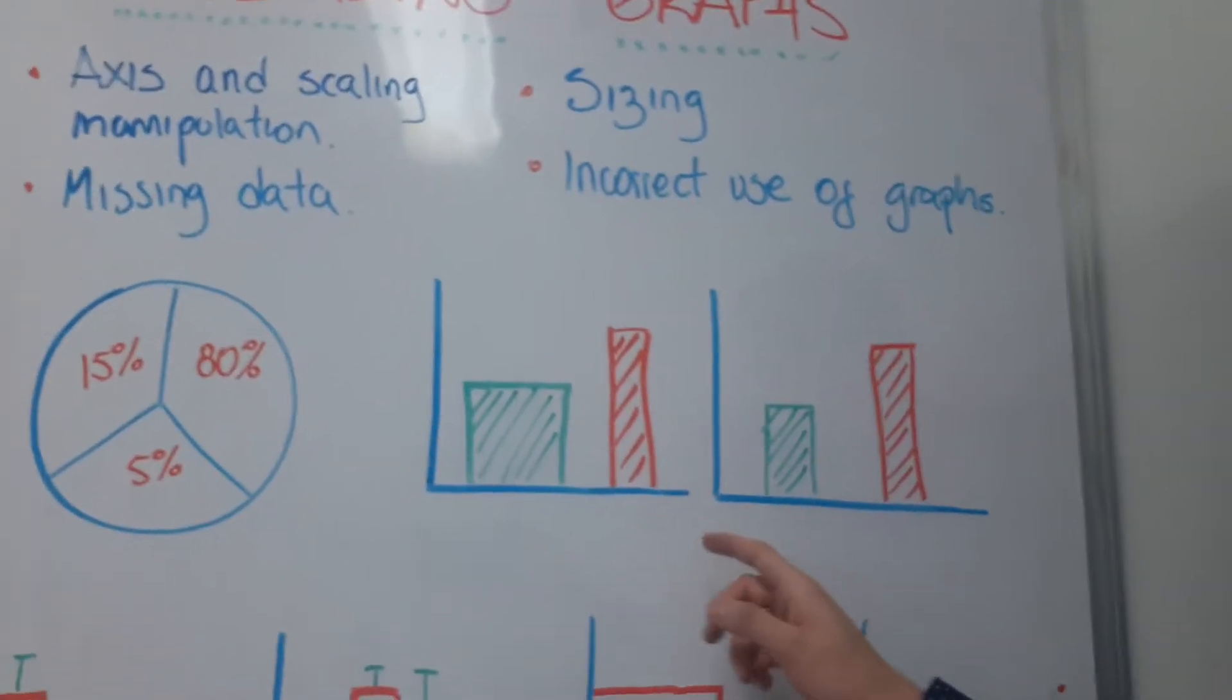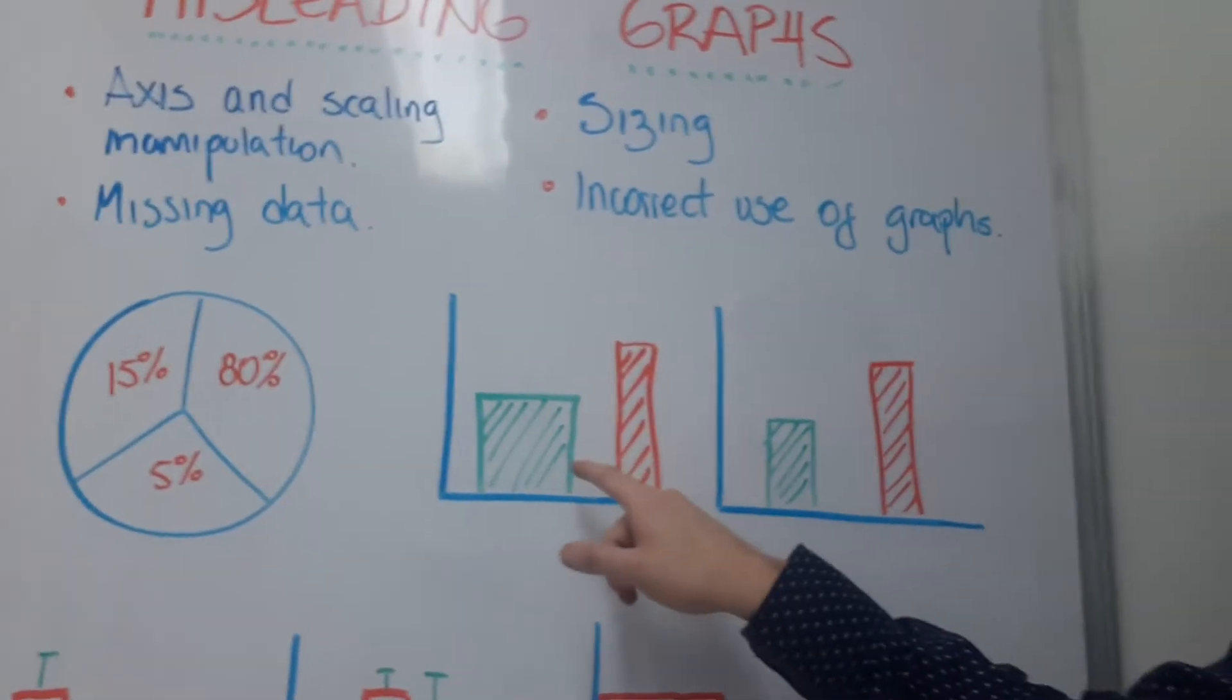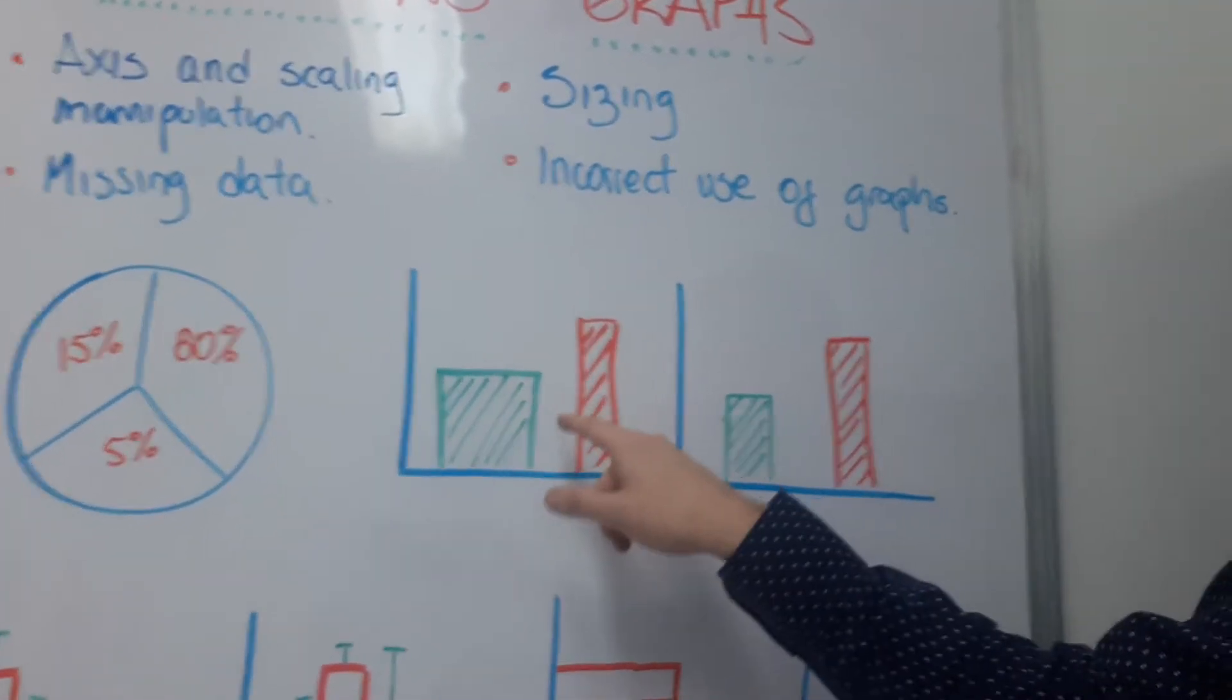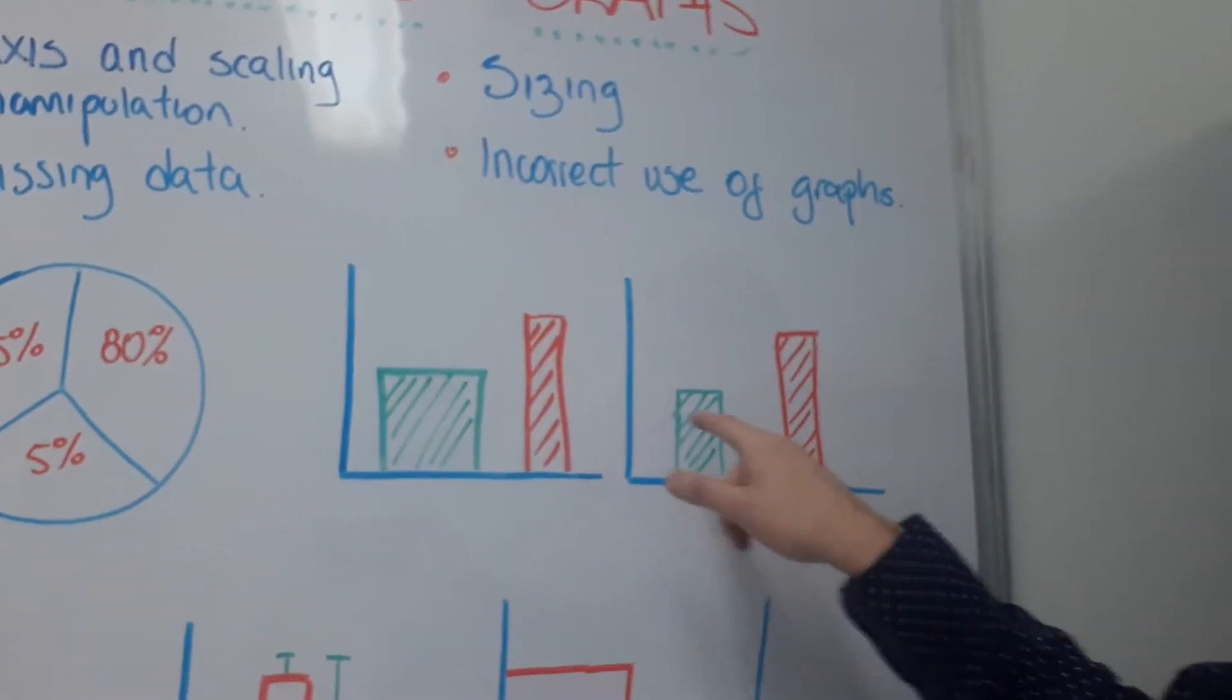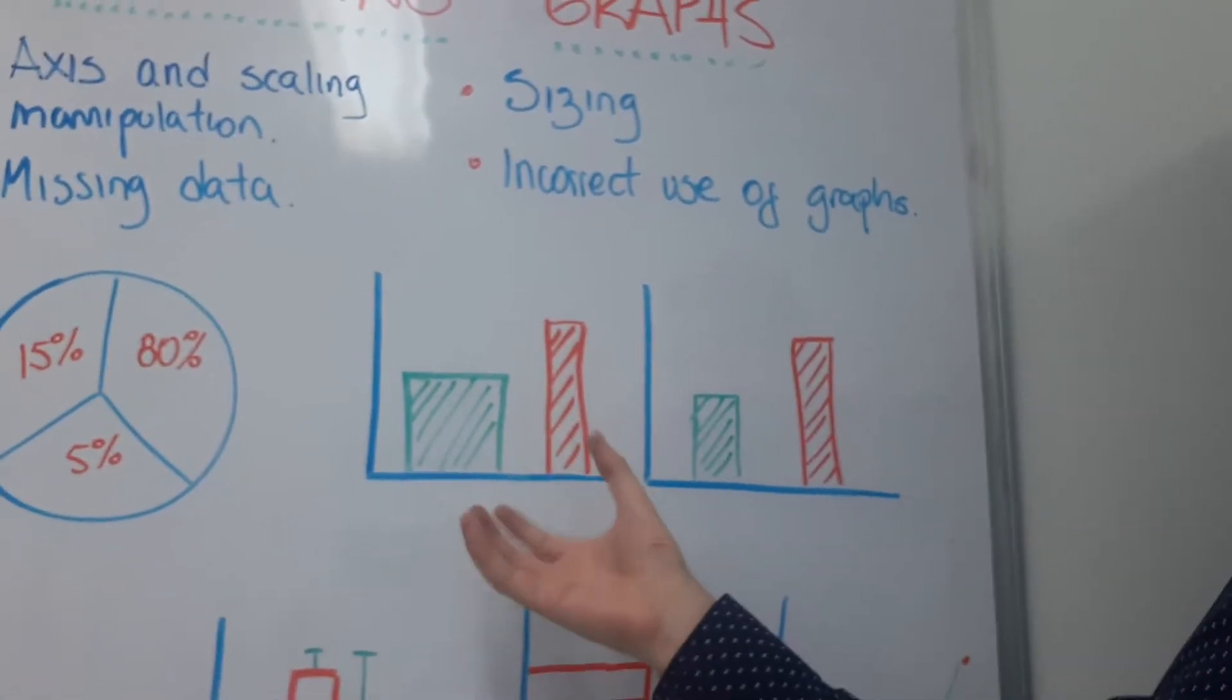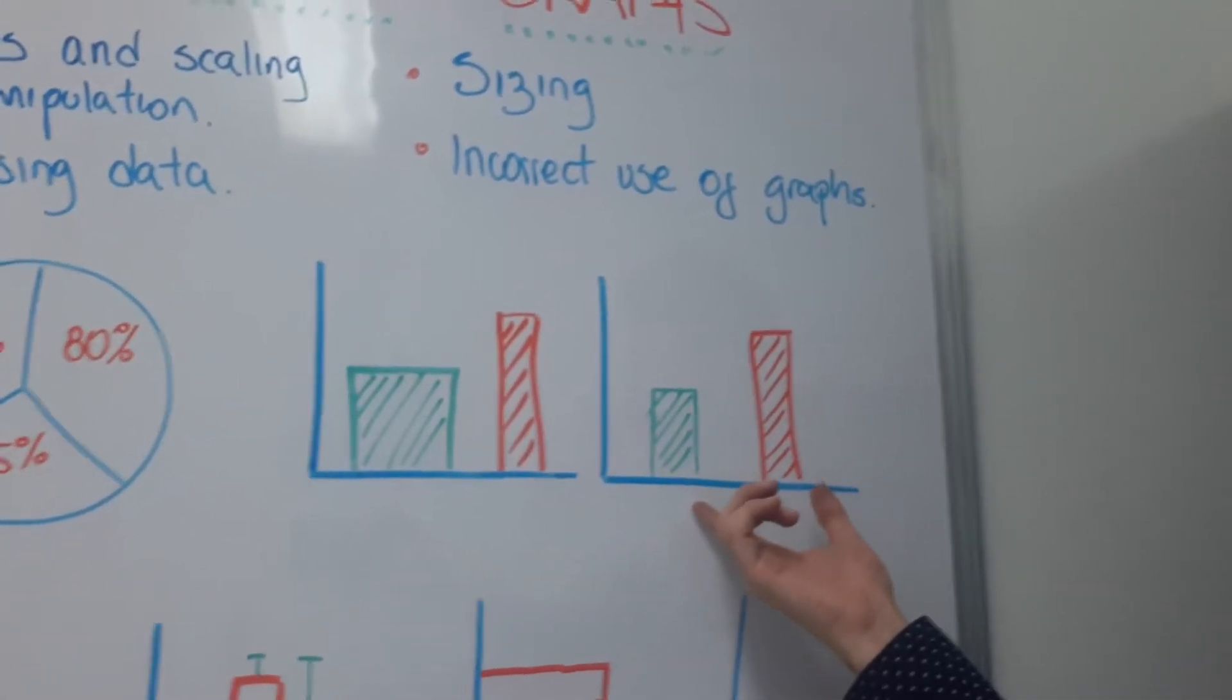Another common way to manipulate graphs is the size. For example, you can see both graphs and you can see that this graph is wider than this one, even when they are the same height. So if you see this graph, you can see there are very strong results compared to this one.